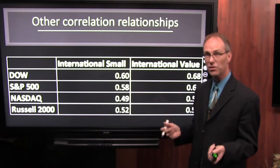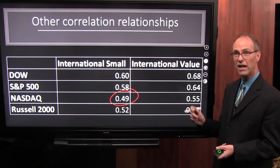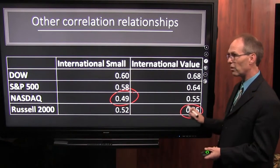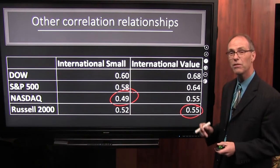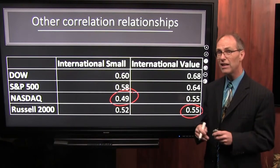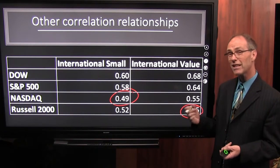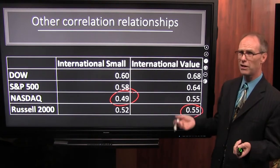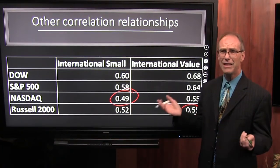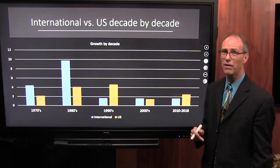If we look at international small stocks versus the NASDAQ, we see very low correlation. International value stocks with either the Russell 2000, the NASDAQ, or any of these other areas of the market also show very, very low correlation. That's what we want to be looking at — totally different areas of the market that, let's face it, the media is not going to report on. When's the last time you heard them say what international small stocks or international value stocks did today? They don't talk about that.